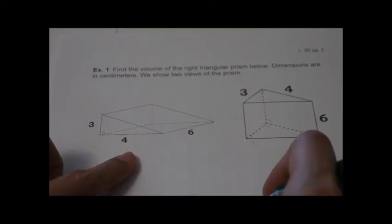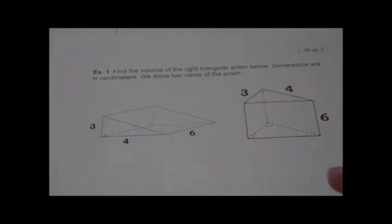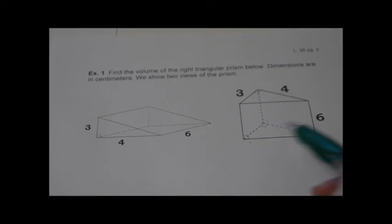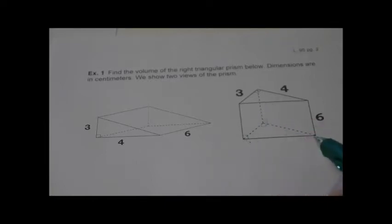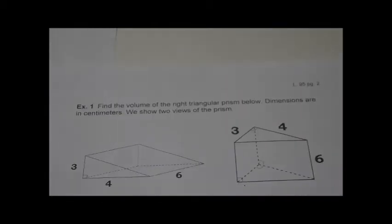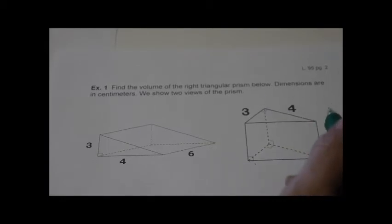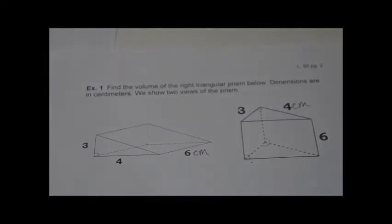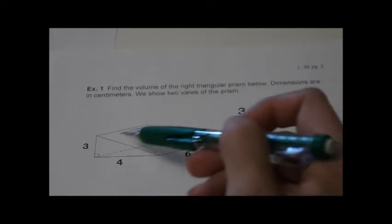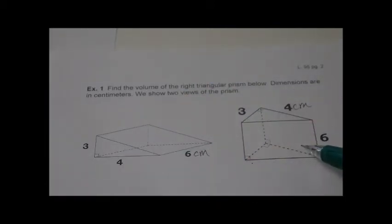Example one: find the volume of the right triangular prism. When they say 'right,' it means this thing is not leaning — it's straight up and down, meaning the height is perpendicular to the base. Here it is laying down and here it is sitting up. It's also a right triangular prism because it's a right triangle.